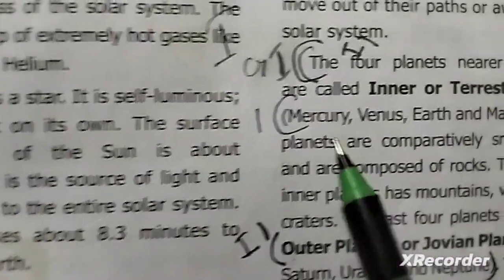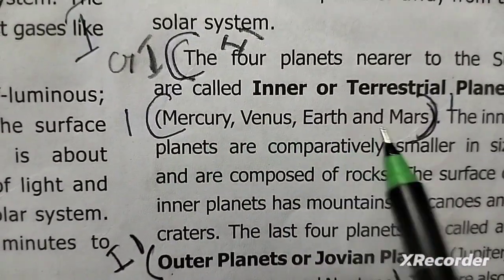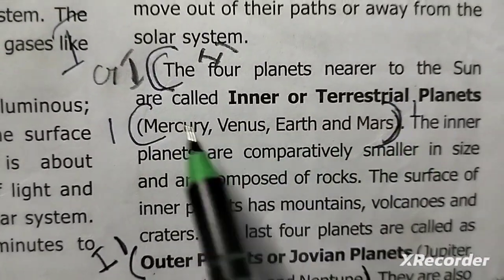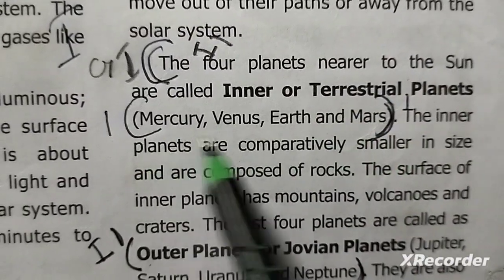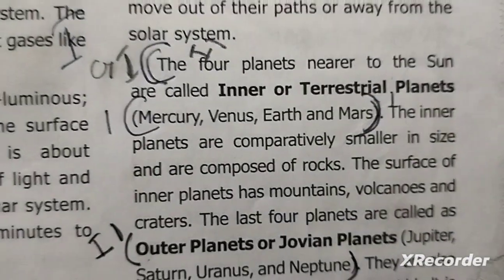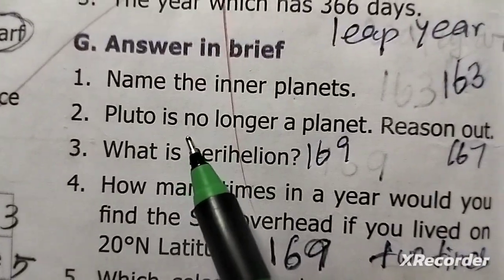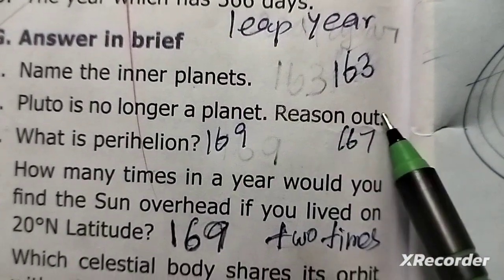Answer the following. First question: name the inner planets. Mercury, Venus, Earth, and Mars are the inner planets. Second question: Pluto is no longer a planet — reason out.